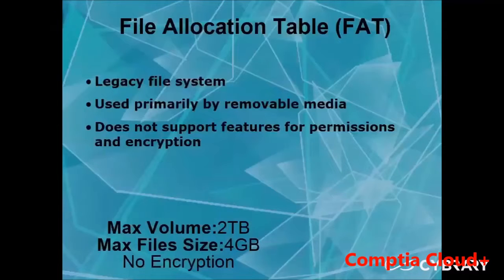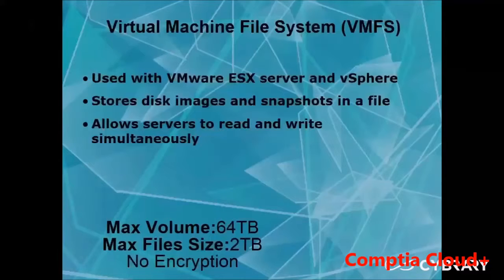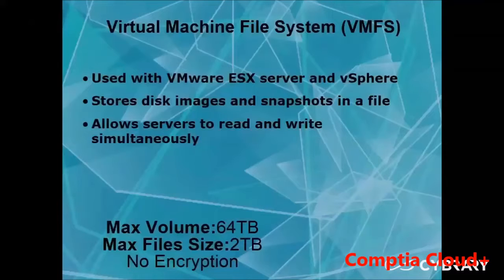FAT has a max volume size of 2 terabytes but a max file size of only 4 gigabytes, and it offers no encryption. VMFS stands for Virtual Machine File System and is used primarily for virtual machines. vSphere and ESX use VMFS, storing disk images and snapshots in a file — it acts as if it's an actual hard drive but in reality it's a file. Because it saves as a file, it allows servers to read and write to it at the same time. VMFS has a max volume size of 64 terabytes and a max file size of 2 terabytes, and it does not offer encryption.